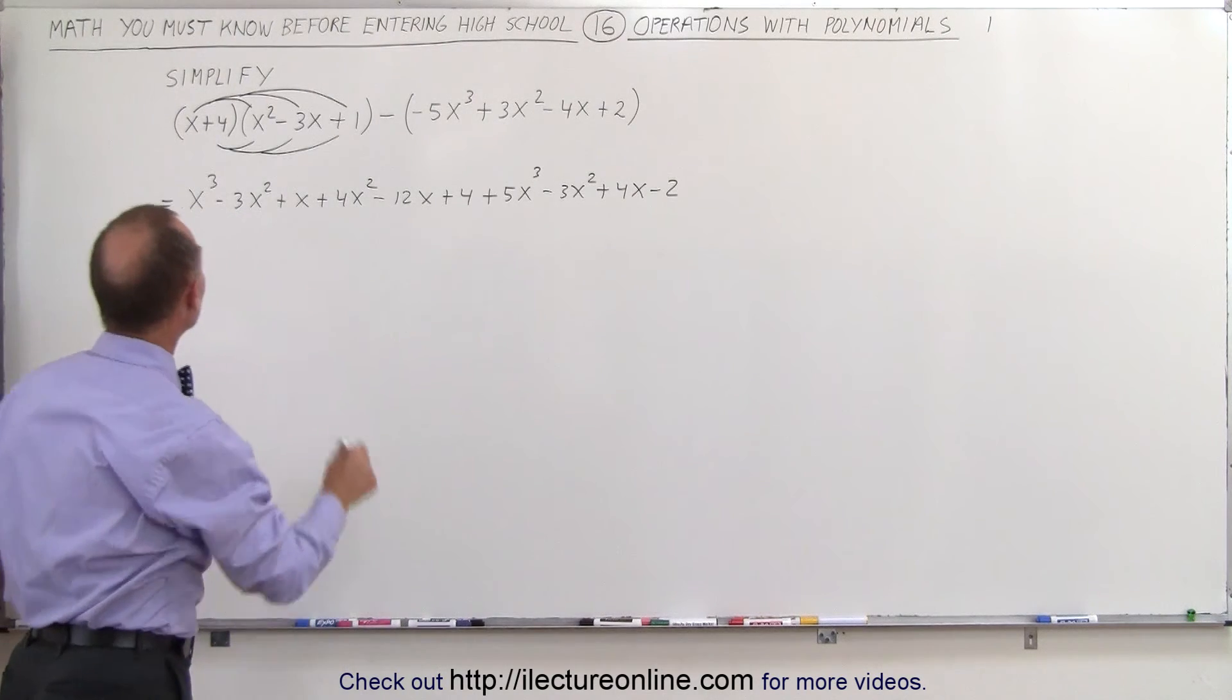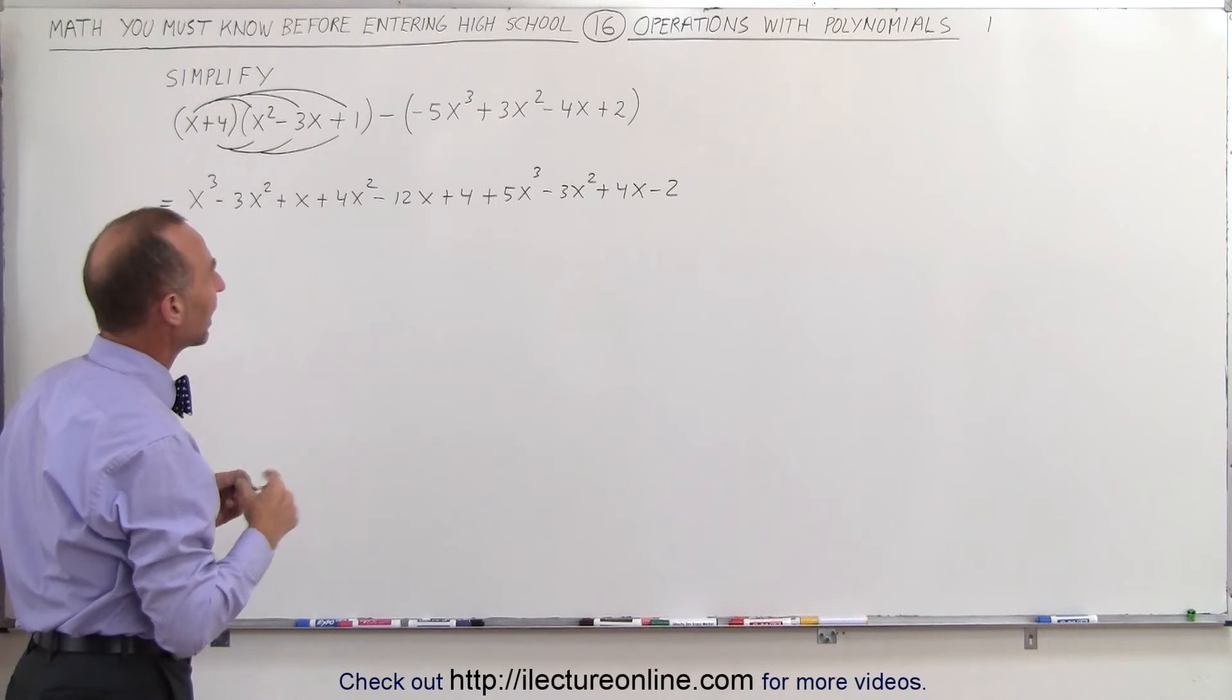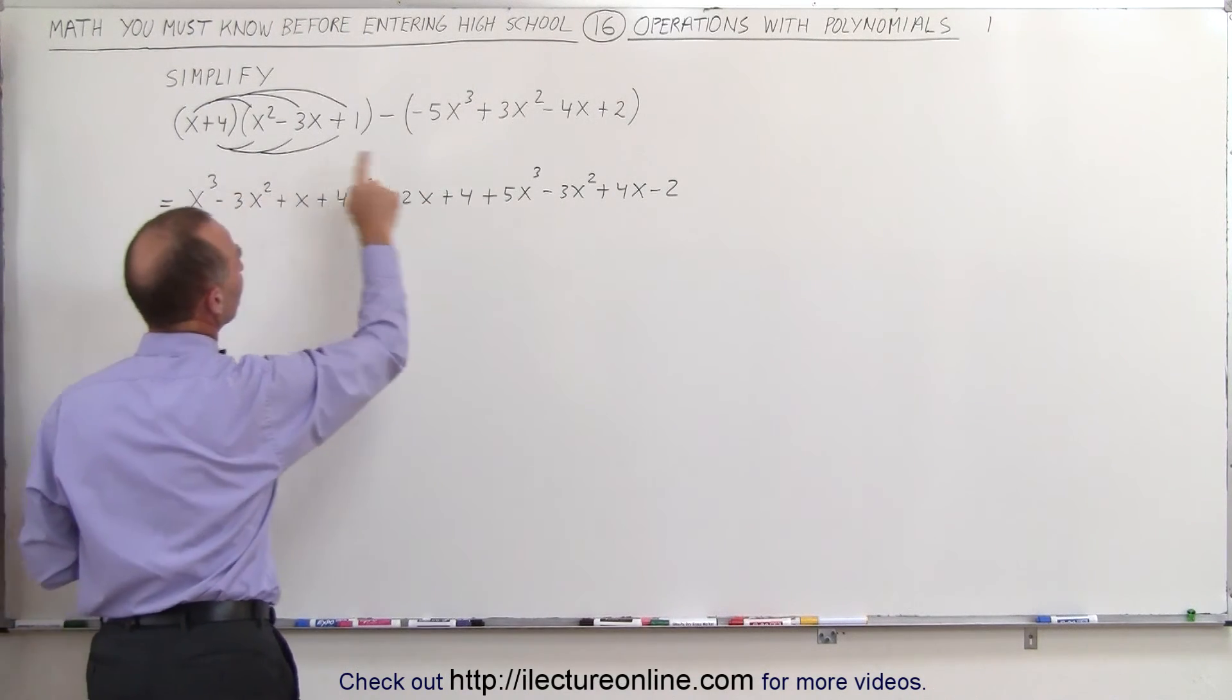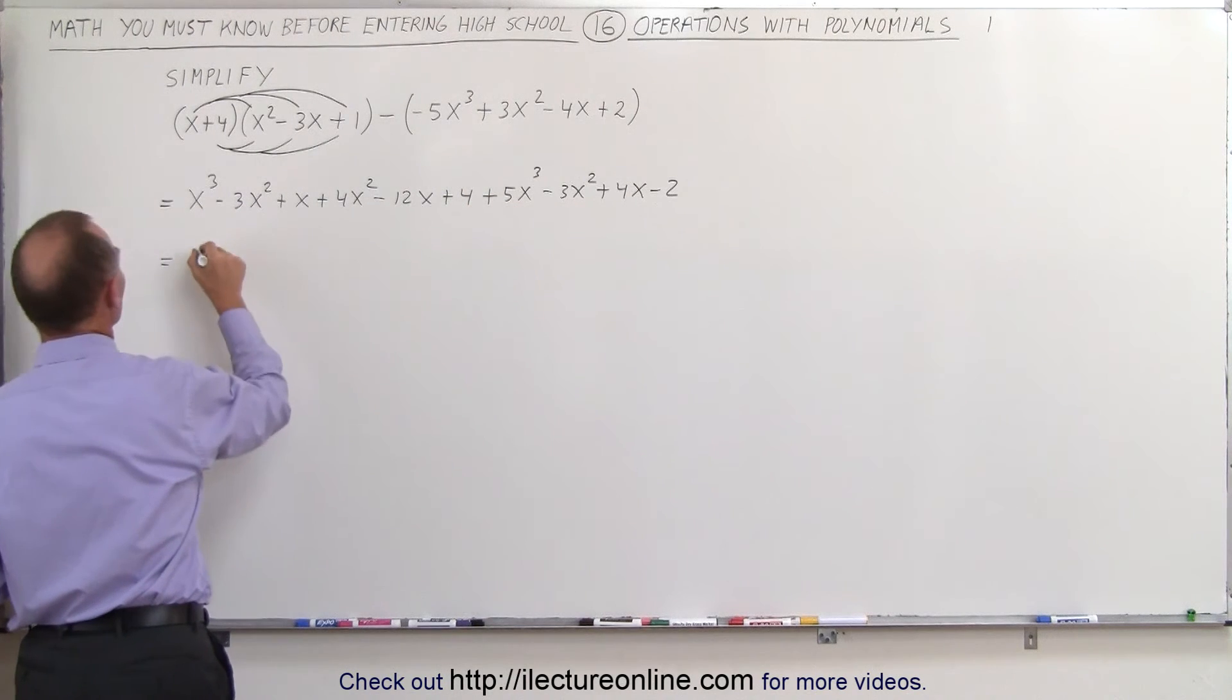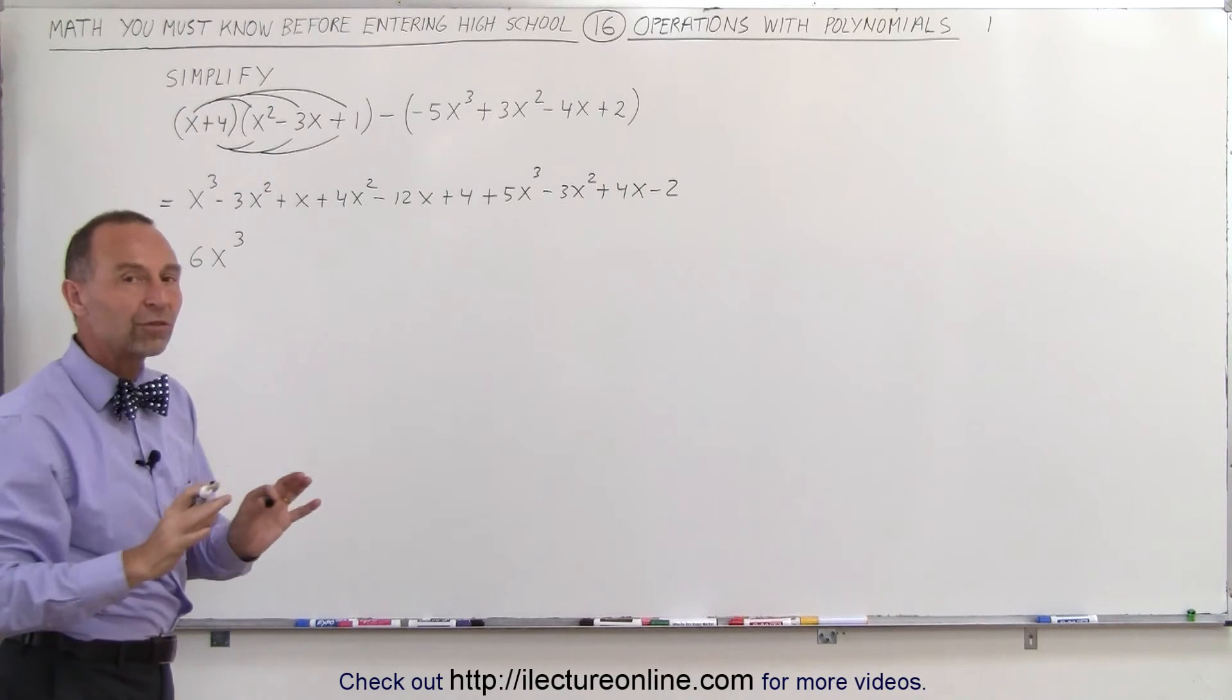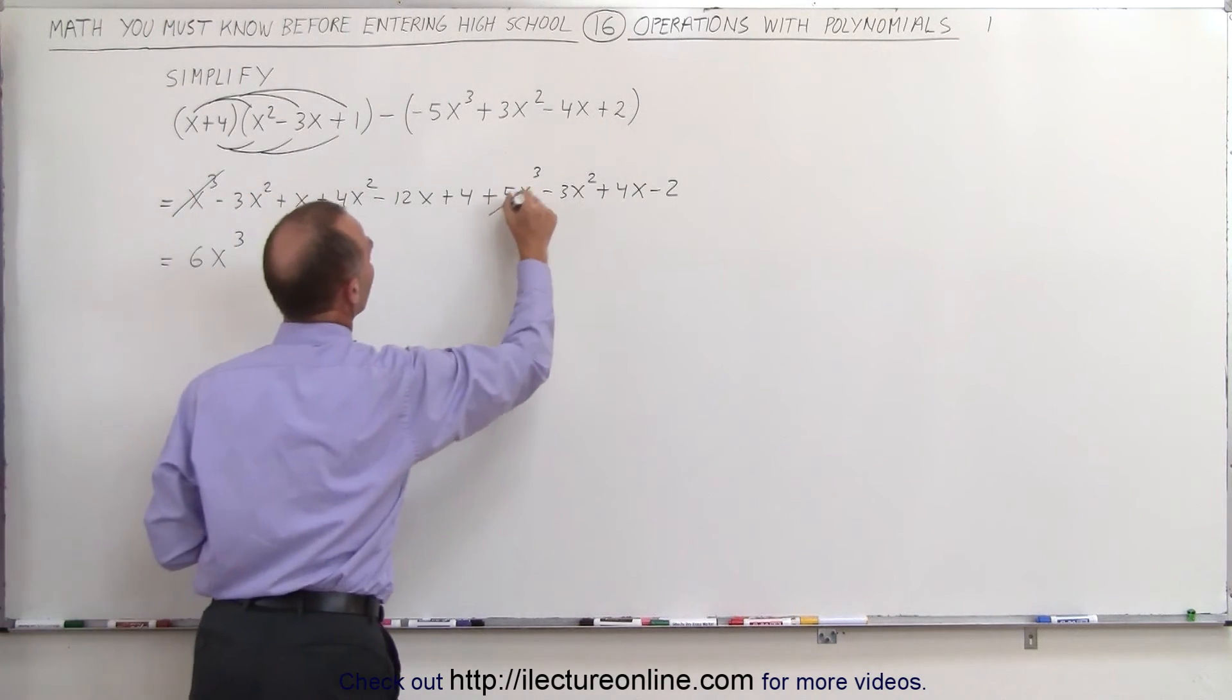The next step now is to go ahead and collect all the common terms. So we look for all the terms that have an x cubed in it. There's two, one here and one there, so 1x cubed plus 5x cubed is 6x cubed. Sometimes it helps to cross out the ones you already have taken account for.